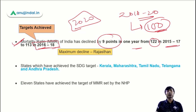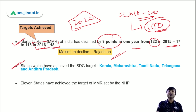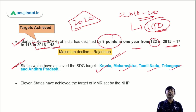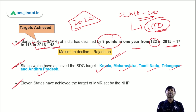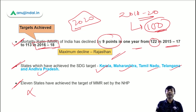If you talk about the maximum decline in MMR, Rajasthan has shown the best performance. Five states have already achieved the SDG targets — Kerala, Maharashtra, Tamil Nadu, Telangana, and Andhra Pradesh. Earlier there were three, but now it has increased to five states, well ahead of the 2030 target. In total, 11 states have achieved the MMR target as per the national health policy.